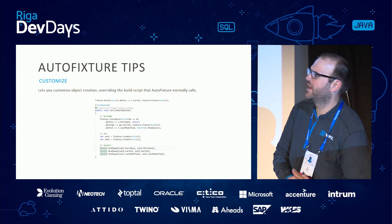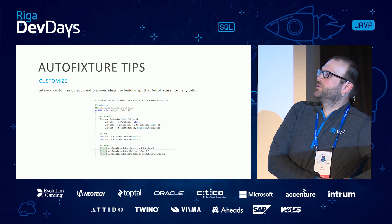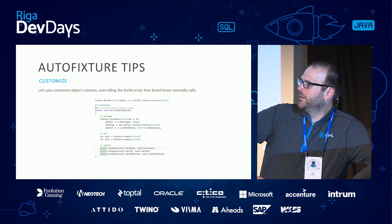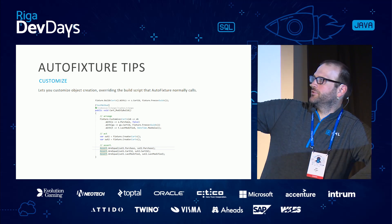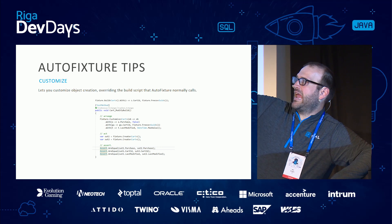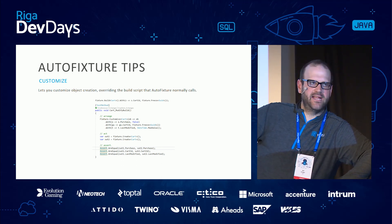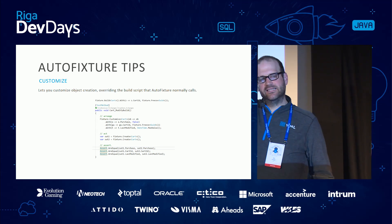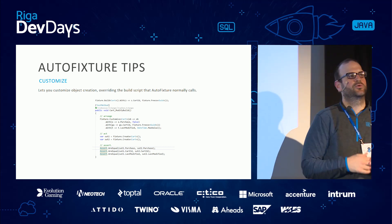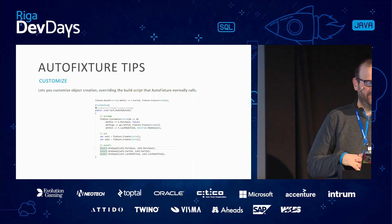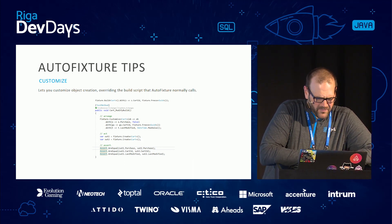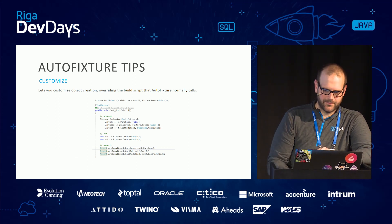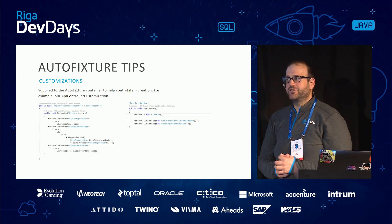AutoFixture Customizations let you customize the object creation algorithm. I have a Cart, and I'm telling AutoFixture: customize your creation algorithm for Cart so every time I ask you for a Cart, set the IsPurchased flag to false, set the same good, and set the LastModifiedTime to DateTime.MaxValue. AutoFixture will then automatically create that exact cart every single time. This lets you control in depth the exact creation of an object — most useful for larger DbSets where I want to mock specific behavior.